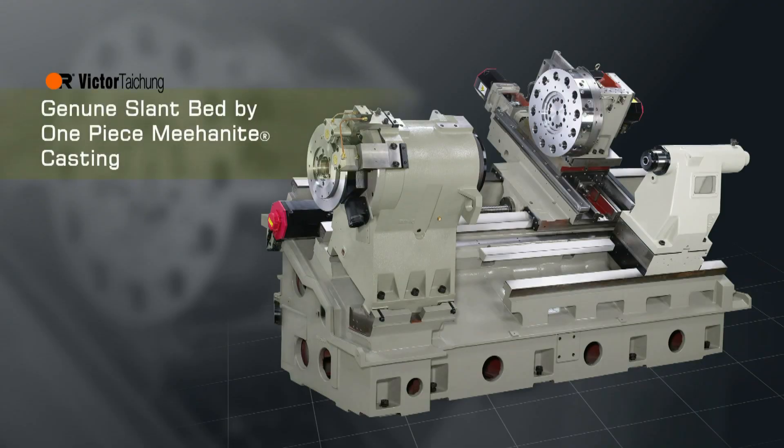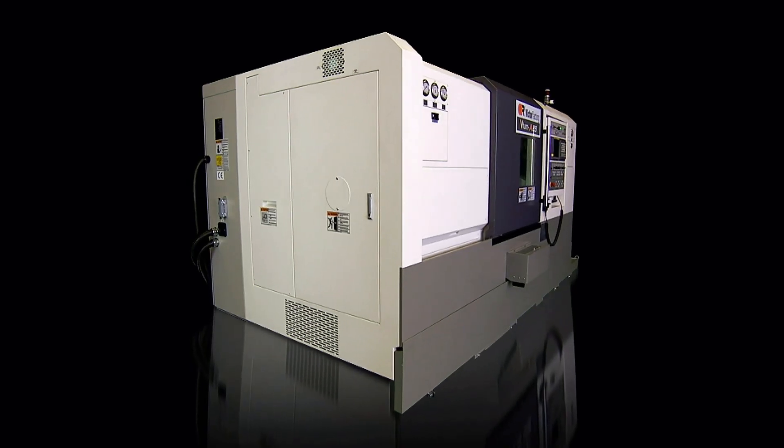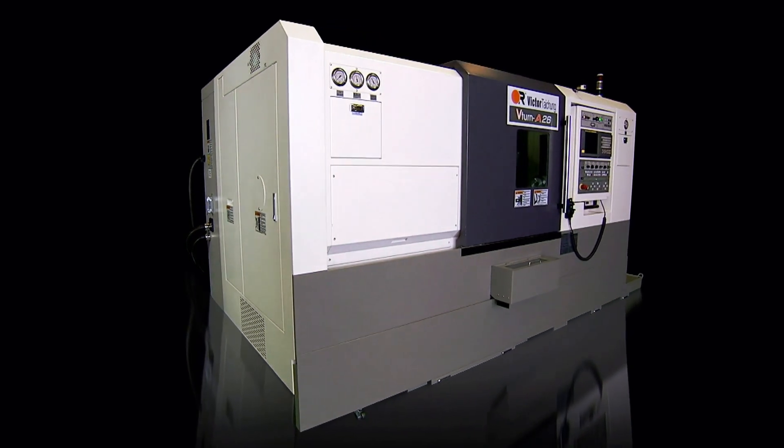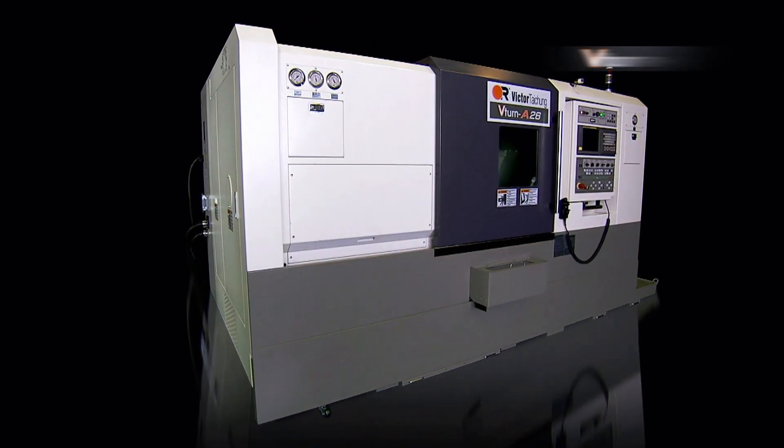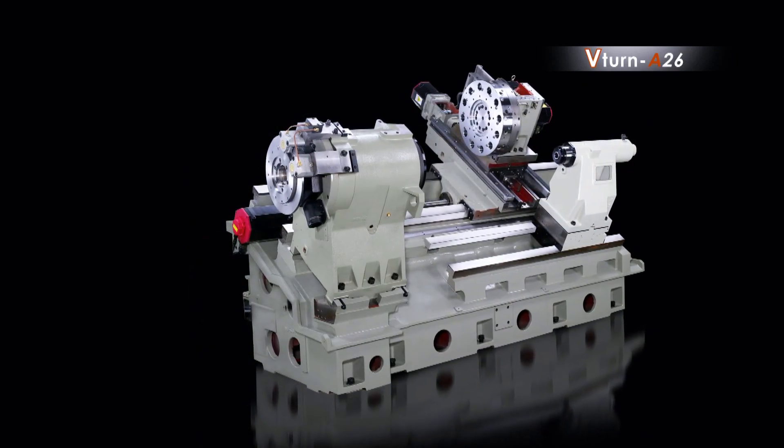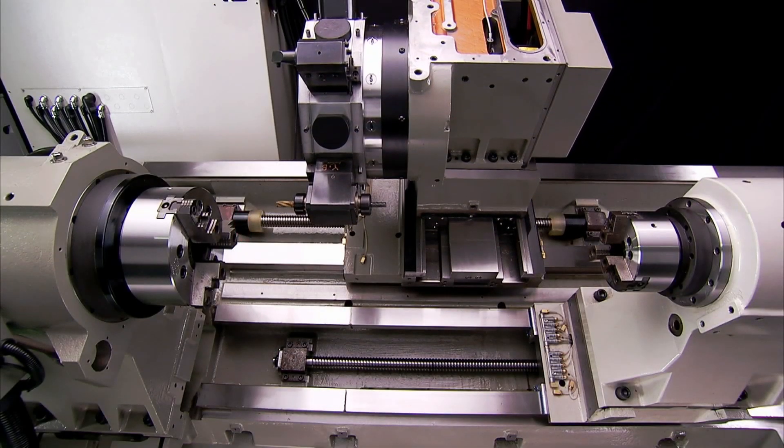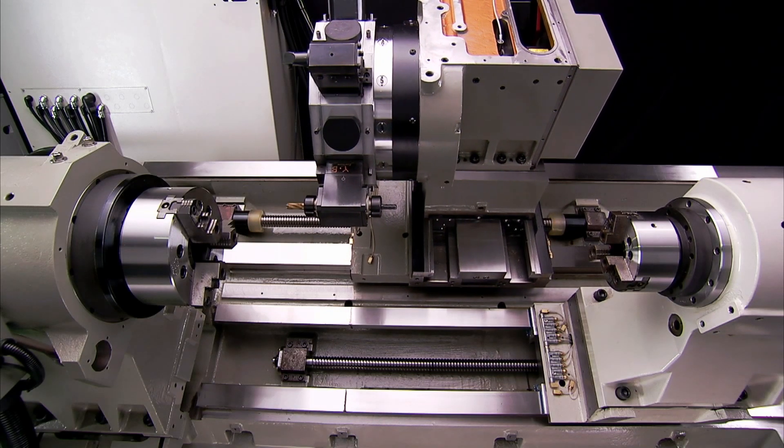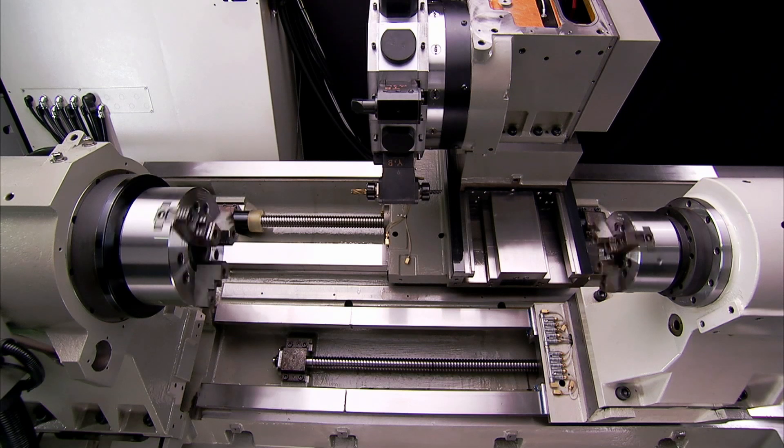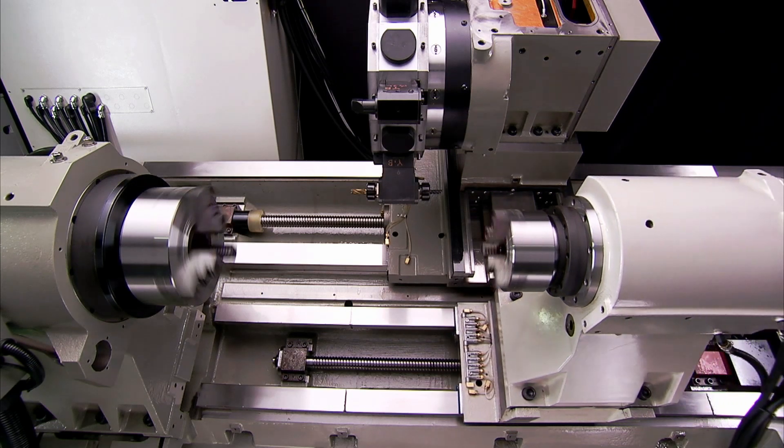Genuine slant bed by one-piece mionite casting. One-piece slant bed with homogenous mionite casting distributes stress throughout structure to ensure perfect alignment in the machined structure. The bed is machined in a single setup on a large five-faced machining center.